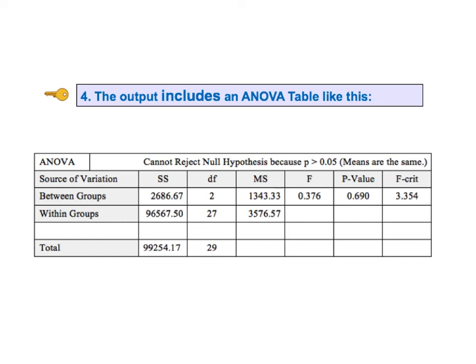The rest of the table shows some underlying details. The SS column shows sum of squares: SS for between groups is the sum of all SSBs, calculated in step 4, and SS for within groups is the sum of all SSWs, calculated in step 2. DF stands for degrees of freedom. For between groups, DF = K − 1; with three groups, DF = 2. For within groups, DF = N − K; with N=30 and K=3, DF = 27. MS is mean sum of squares, and the values for MSB and MSW are given — their ratio gives the test statistic F.